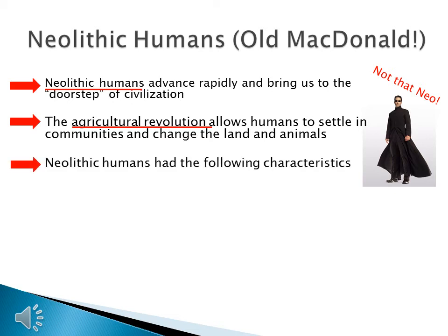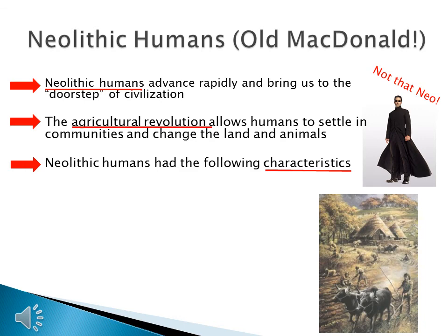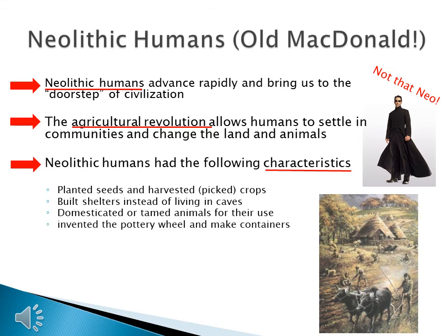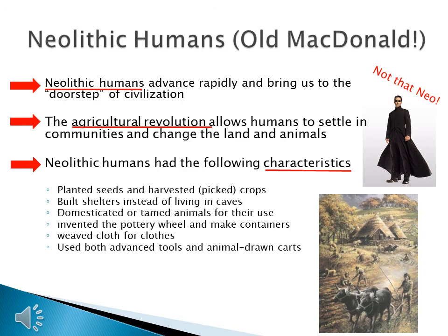Neolithic humans had the following characteristics. They planted seeds and harvested their crops. They built shelters instead of living in caves. They domesticated or tamed animals for their use — no longer roaming the countryside looking for food. Instead, they kept oxen in their communities to help plow, and sheep to shear for wool clothing. They invented the pottery wheel to store things in containers, wove cloth into clothes, and used advanced tools and animal-drawn carts to make life easier.